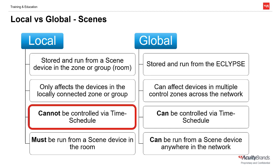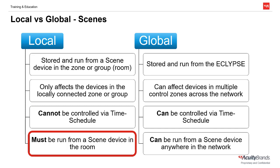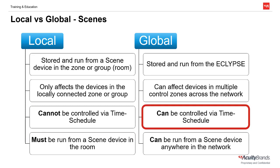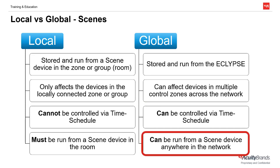Local scenes cannot be controlled by a time schedule — they must be run from a scene controller in the room. But conversely, global scenes can be controlled by a time schedule, and can also be run on demand from a scene controller device installed anywhere on the network. Note that you must have a fully networked system with bridges and an Eclipse in order to utilize global profiles and presets. Standalone rooms and zones can only use local scenes.